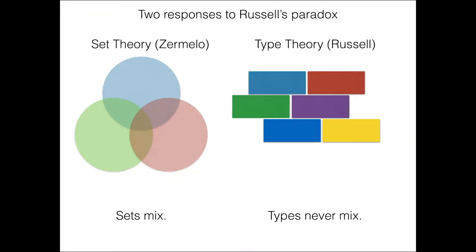Some of the systems are based on set theory. Some of the systems are based on type theory. So, Russell's paradox had two responses. The axioms of Zermelo-Fraenkel and similar systems leading to axiomatic set theory. But Russell himself suggested that paradox could be avoided by introducing type systems. And roughly speaking, just in very crude terms,